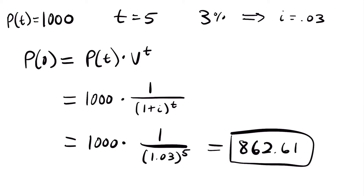And so what does that mean? This means that if we deposit $862.61 today, we will have $1,000 in our account in five years, assuming a 3% compound interest rate every year. Now let's say that you wanted to check this — we could reverse this and check our work by using our future value formula. We could say: if this is my initial deposit, how much am I going to have in five years at that 3% compound interest rate?